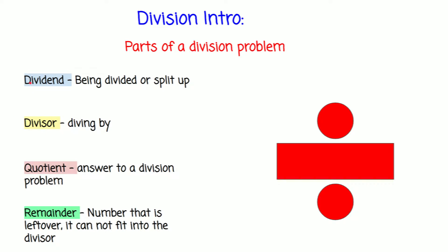We're dividing the dividend by the divisor. Now let's see what quotient is. Quotient is the answer to the division problem. Remainder — the number that is left over that cannot fit into the divisor. So if we have a 1 and the divisor is 2, we have the 1 as the remainder. One cannot fit into two because it's one less than two. So we revised what the parts of a division problem are: dividend, divisor, quotient, and remainder.